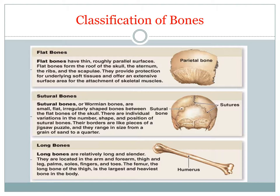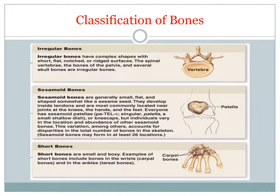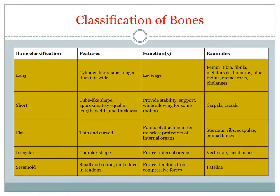Here you can see some examples of classifications of bones. Flat bones, like the parietal bone in the skull. Sutural bones, like the sutures within the skull. The humerus is an example of a long bone. The vertebrae, an example of an irregular bone. The patella, a sesamoid bone. And the carpal bones are examples of short bones. This table also shows some of the features and functions of the different bone classifications.